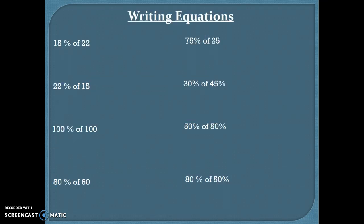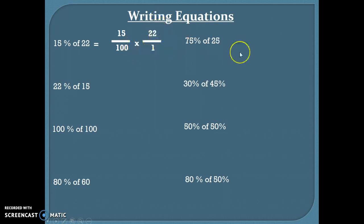In this section we are going to practice writing equations — we're not going to solve them quite yet. For example, 15% of 22 would be 15/100 times 22/1, because 22 is a whole number. Go ahead and pause the video, do the next four, then come back and check your work. Hopefully you wrote something like this for these.